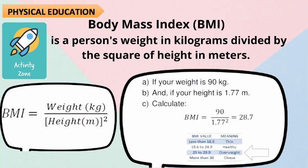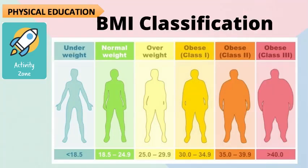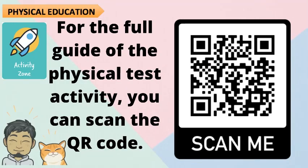Body Mass Index or BMI is a person's weight in kilograms divided by the square of height in meters. Here is the formula on how you will get your BMI. BMI classification is also provided. For the full guide of the physical fitness test activity, you can scan the QR code.